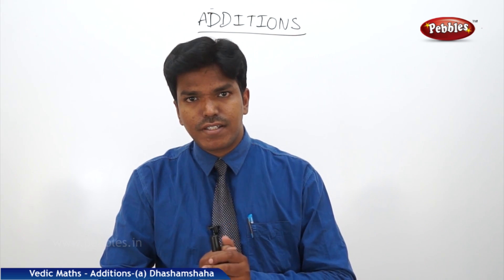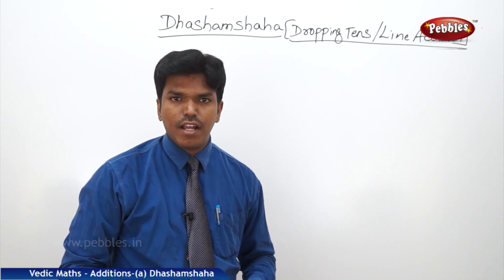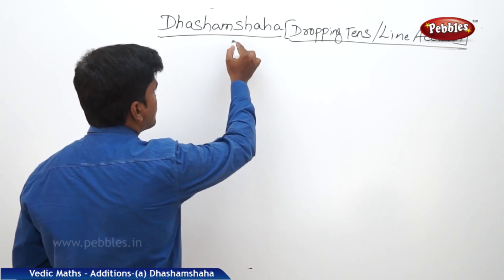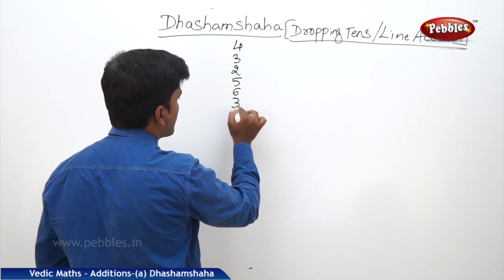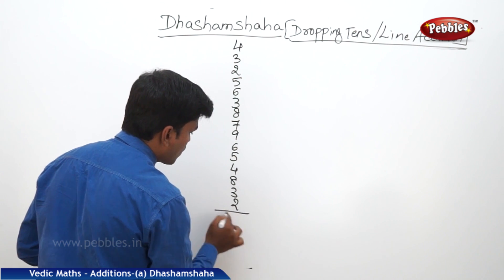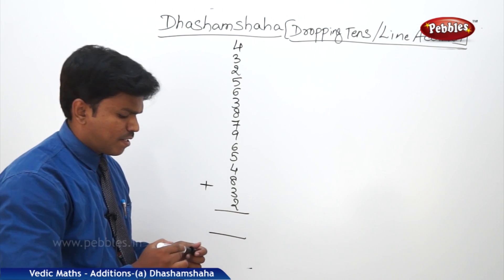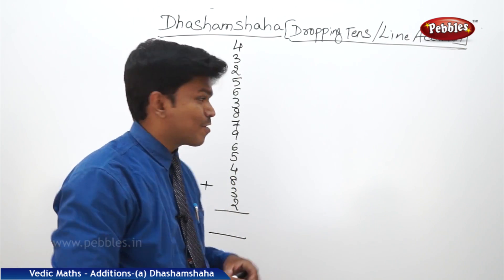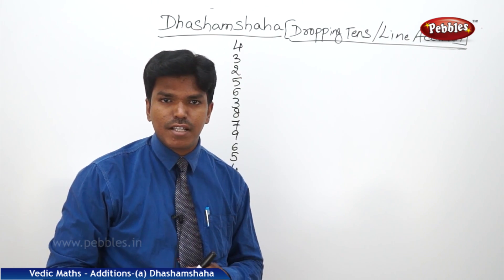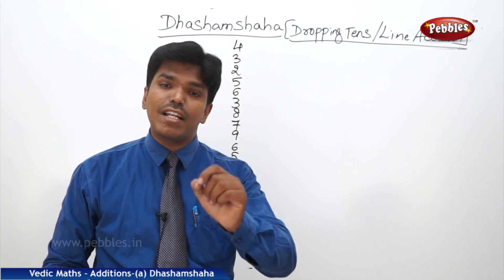Now let us start the additions. In additions, the first concept is Dashamsaha, and the English meaning is 'dropping tens method' or 'line addition.' Let us take one example. I have given a small problem to you. You have to add all these numbers. These many numbers — I know you will feel it is a little difficult. But in Vedic Mathematics, by using the sutra Dashamsaha, we can do this problem very easily and within very less time.